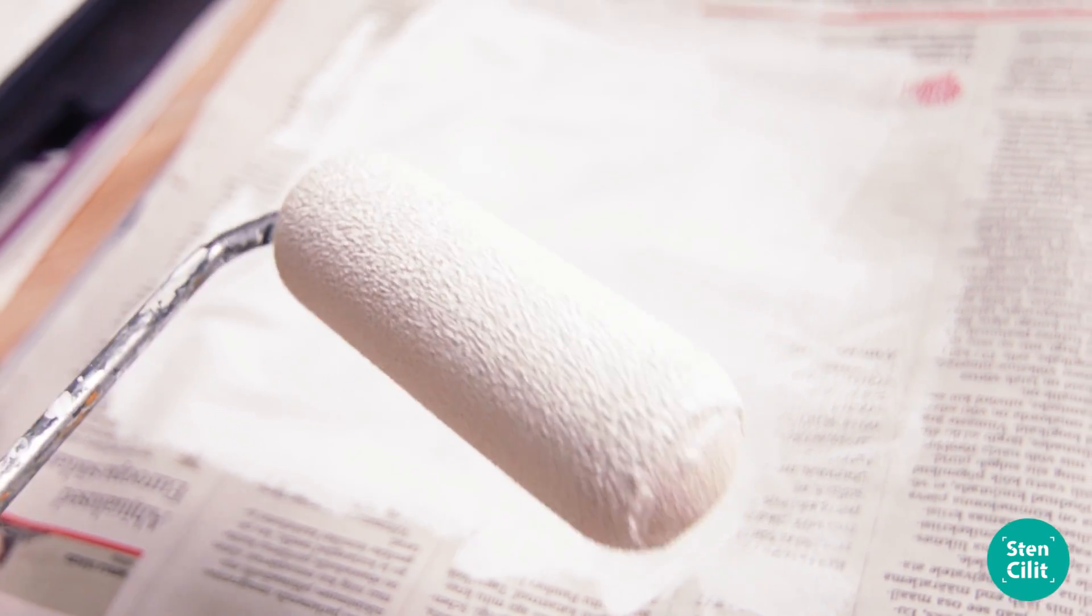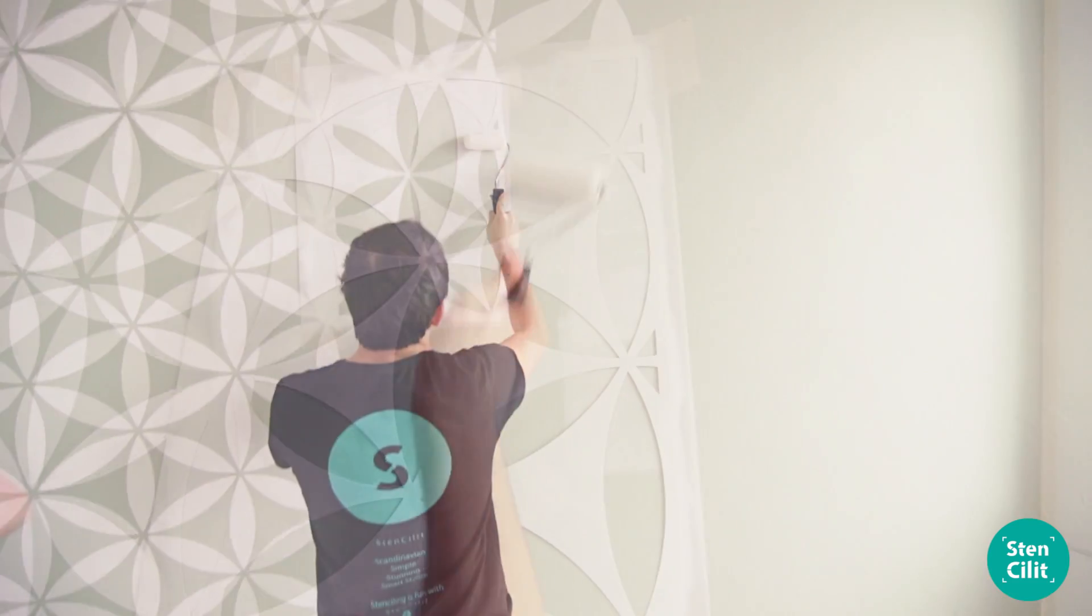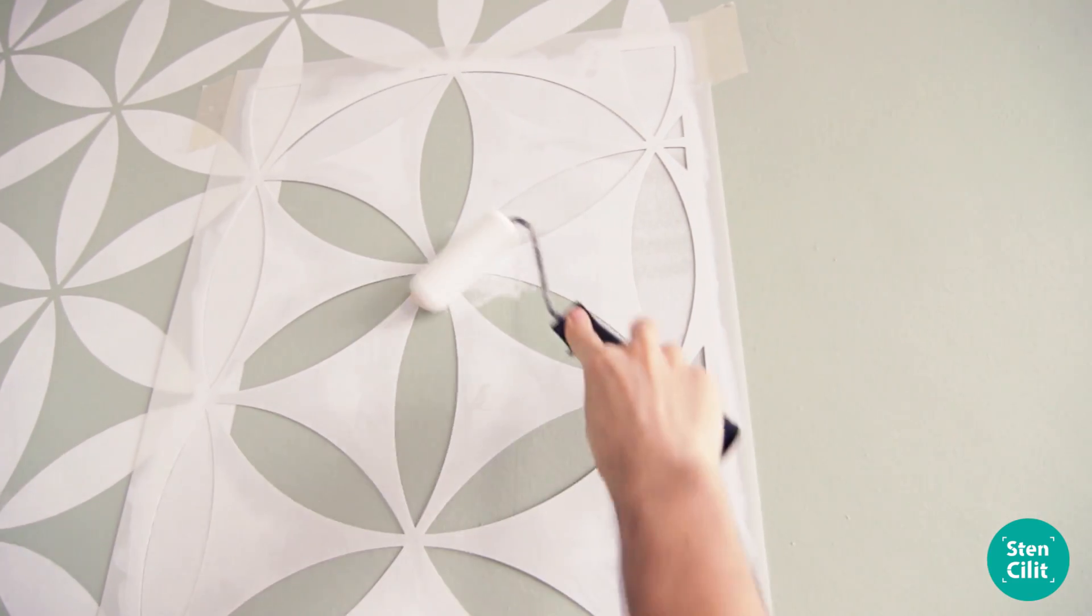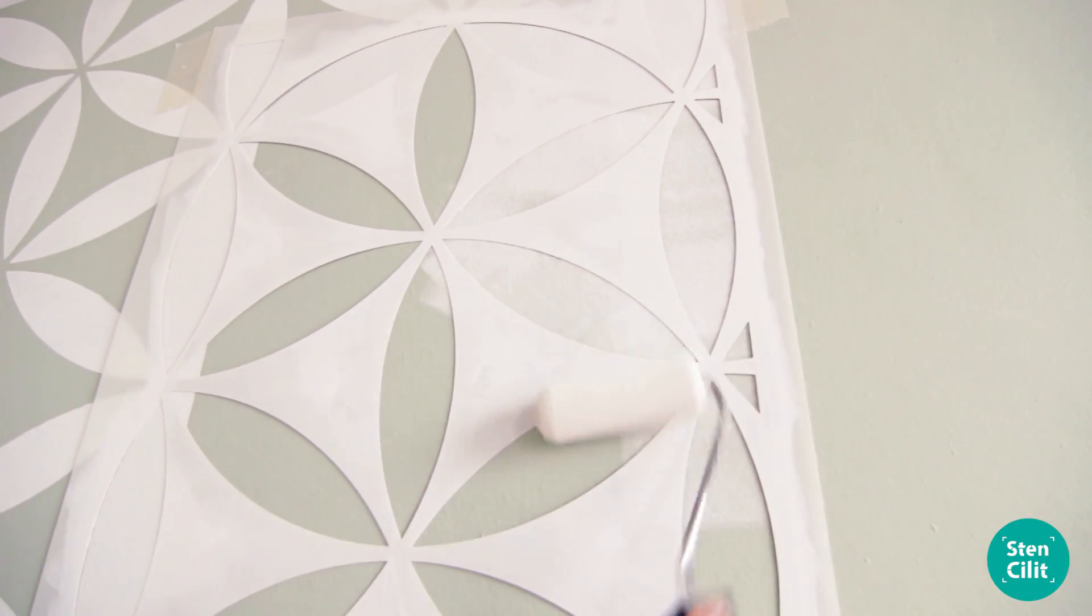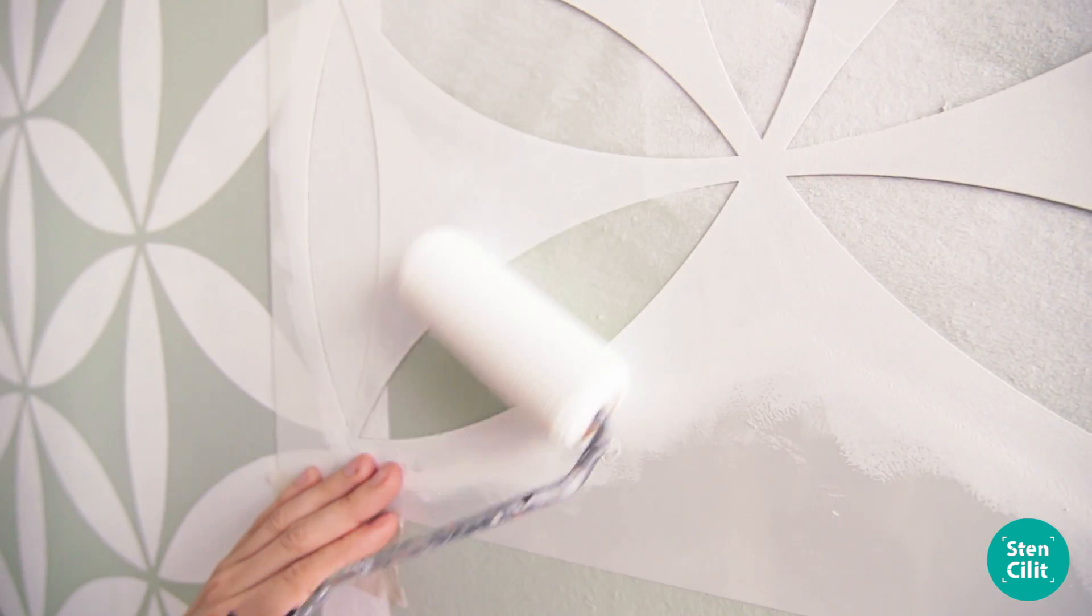Less paint is more in stenciling. Now we can move on to the wall. Use an even, not too heavy pressure on the roller as you roll over the stencil surface. The most important sign to notice that you have taken the right amount of paint is when you see a thin layer of paint.